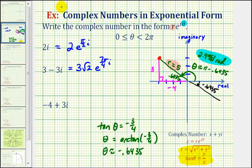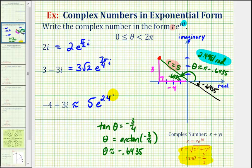So theta is approximately 2.4981 radians. Now that we have r and theta, we can write the complex number in exponential form: approximately five times e raised to the power of 2.4981 times i. I hope you found these three examples helpful.